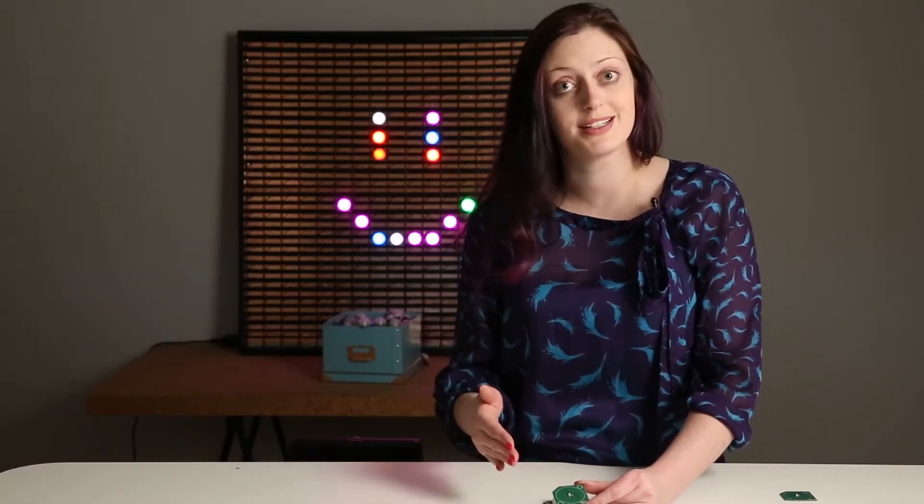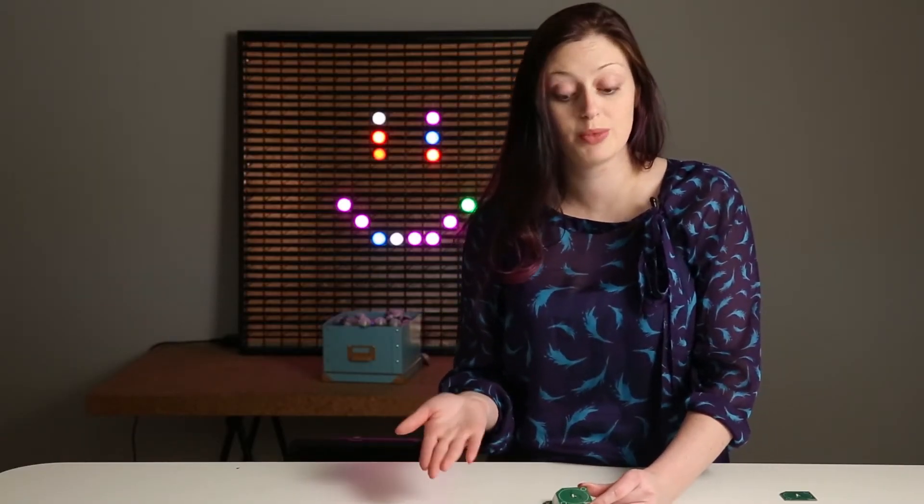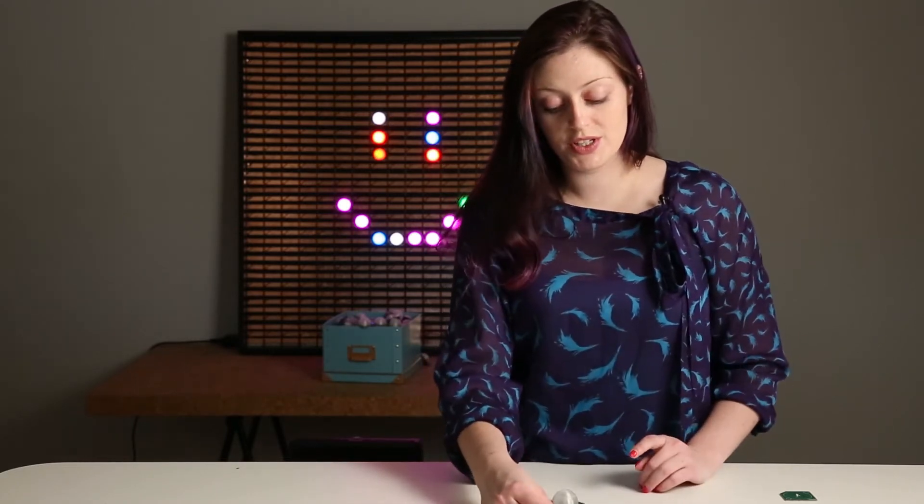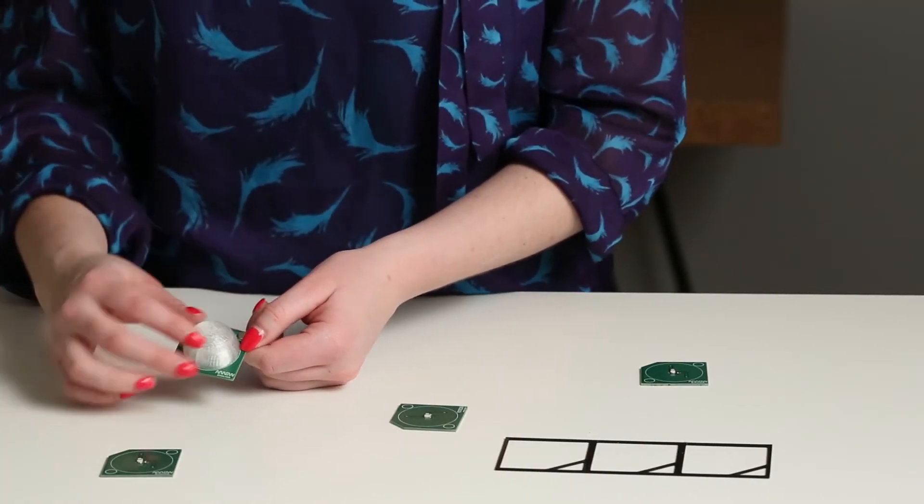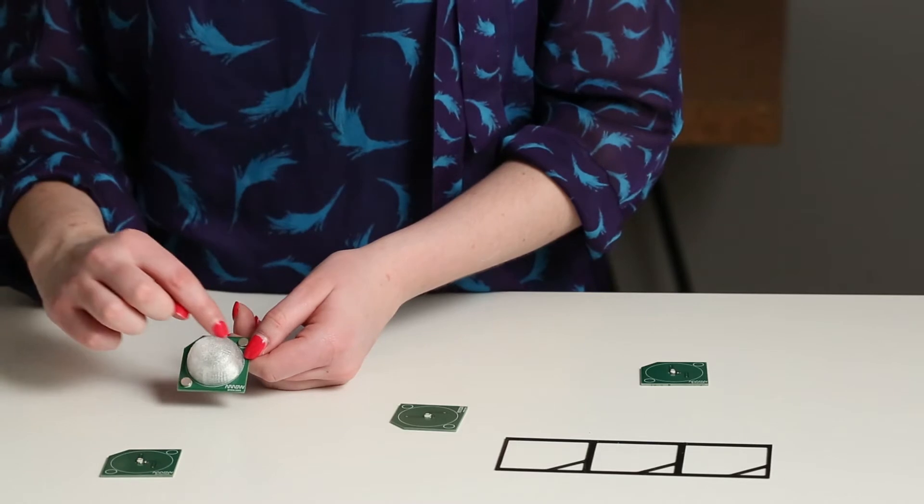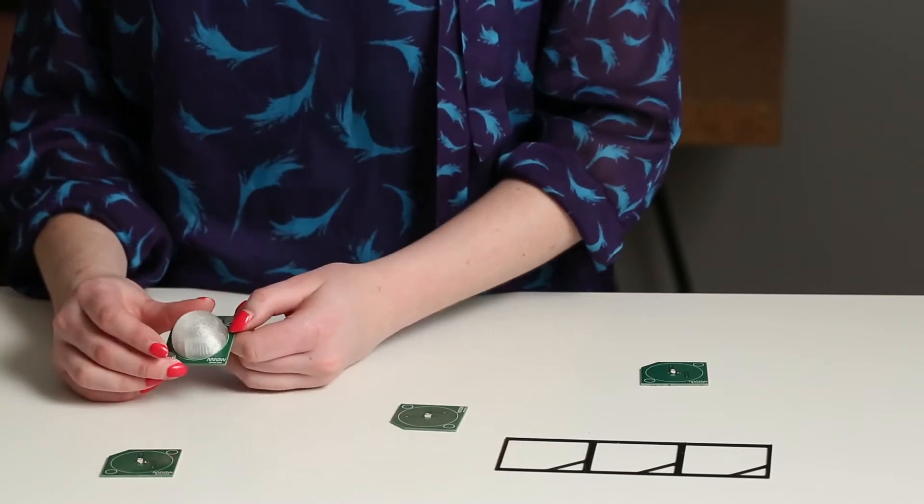This helps keep them all uniform brightness as well as prevents anybody from drawing too much current and potentially getting too hot. Once those are soldered down, we glue down two magnets to keep it on the magnetic board and a big 3D printed diffuse dome.